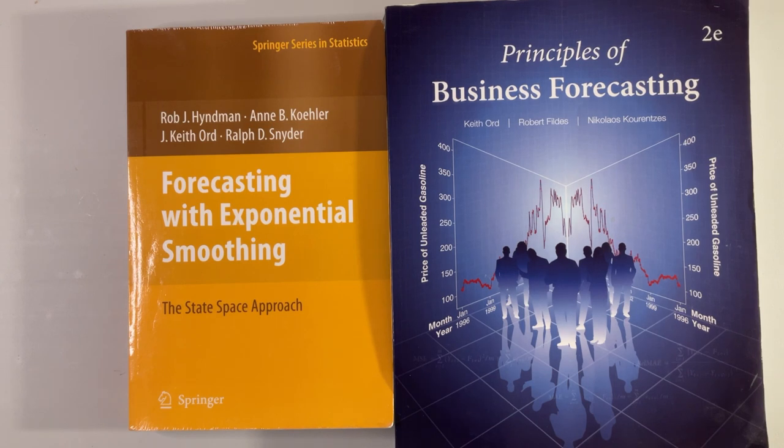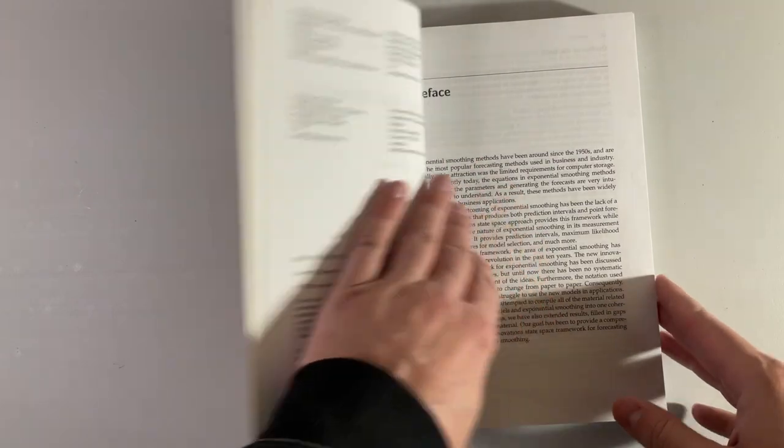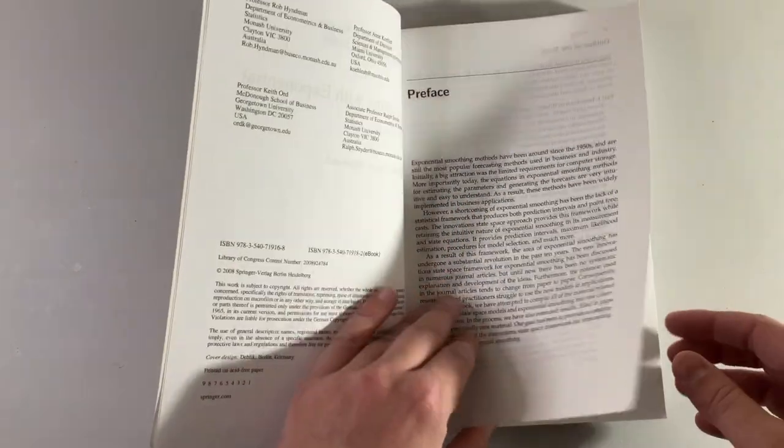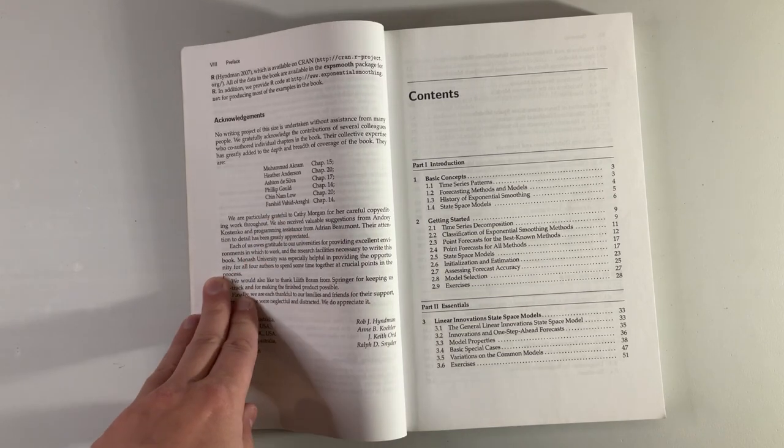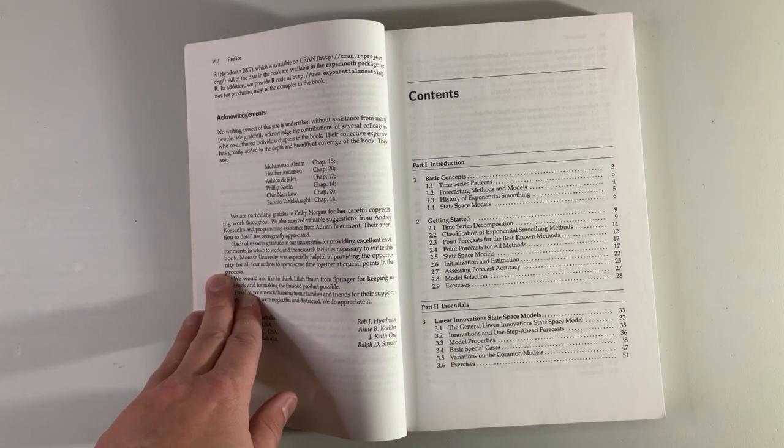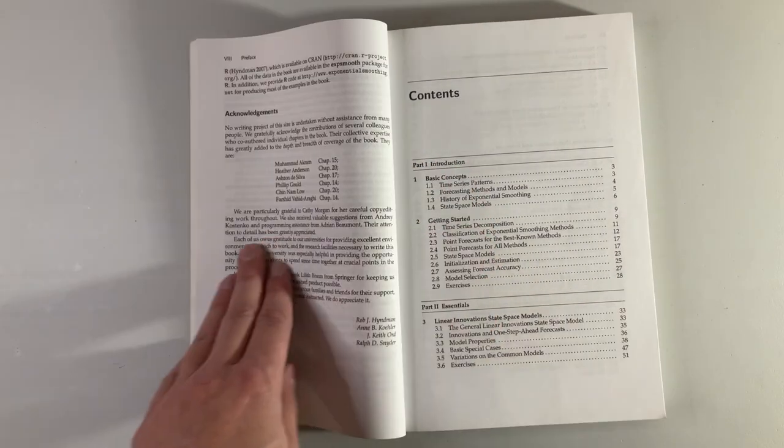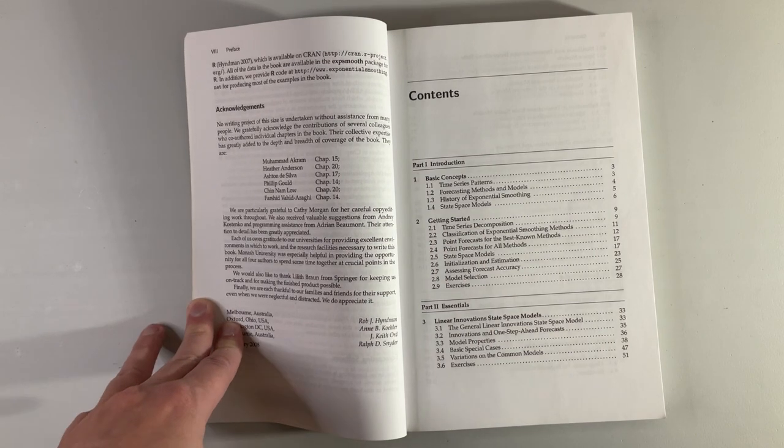Exponential Smoothing was formulated without a statistical framework. It has been a successful forecasting algorithm in practice for decades. Why fuss about the lack of statistical framework in the back end? The authors expound on the utility of having a statistical framework for exponential smoothing.